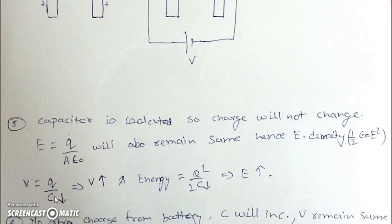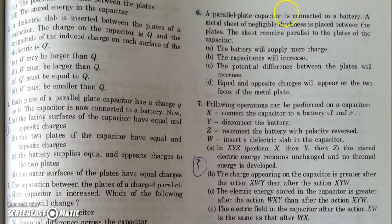As c decreases, v will increase, because Q = CV. And energy, which is q squared by 2C—q remains the same, c decreases—energy will also increase. In the next question, there is a parallel plate capacitor which is connected...